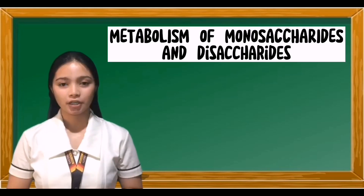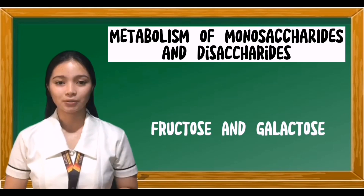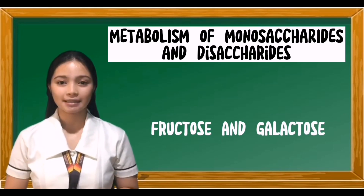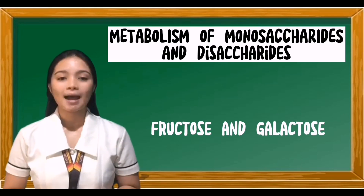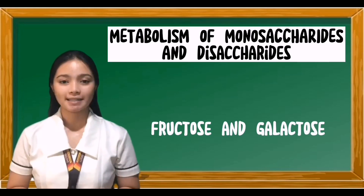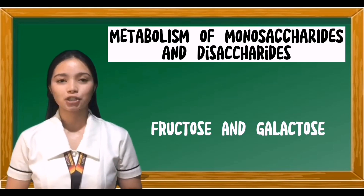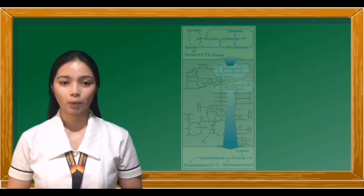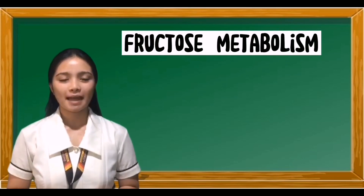Glucose is the most common monosaccharide consumed by humans and its metabolism has been discussed extensively. However, two other monosaccharides — fructose and galactose — occur in significant amounts in the diet and make important contributions to energy metabolism. Galactose and fructose metabolism as part of the essential pathways of energy metabolism is shown in Figure 12.1.